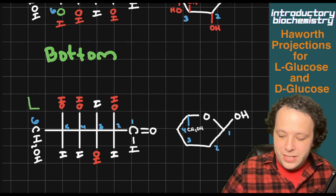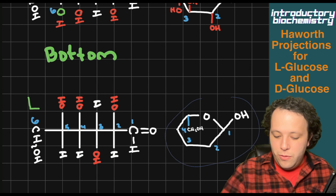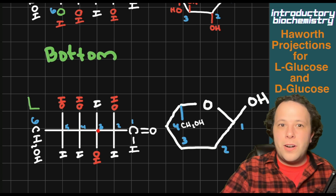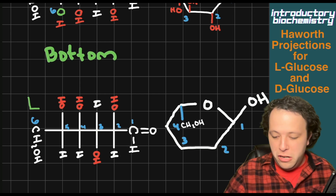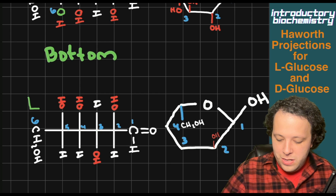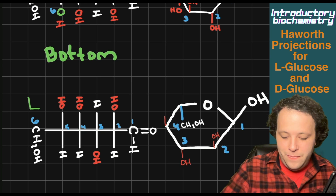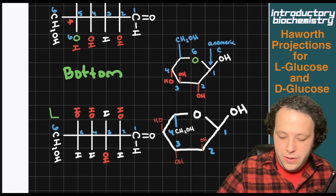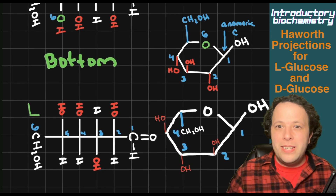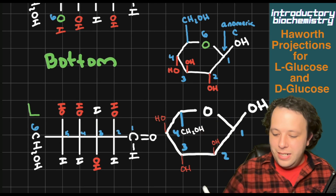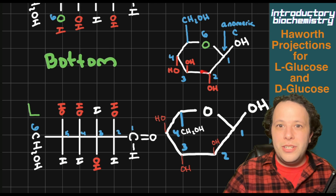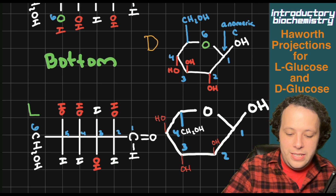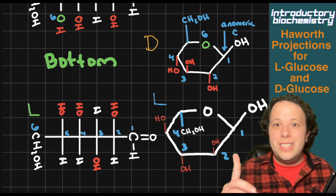For the other carbons, we're going to put our OHs pointing up and down going carbon to carbon. For L glucose: carbon two we have up, carbon three is down, carbon four is up — up, down, up. It's kind of like having a cheat code in a game. So we have up, down, and then up, and that is what our structure would look like. Now comparing the two: we can see that the OH groups are flipped between the different structures. On the D structure going through carbons two, three, and four, we see down, up, down. On the L structure it's up, down, up. This is the difference between a D structure and an L structure.